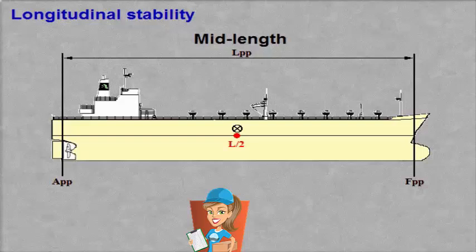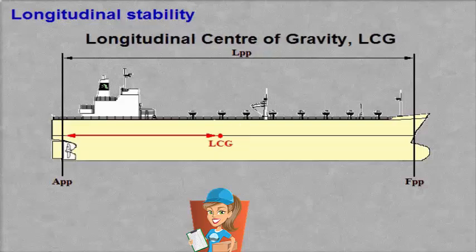LCG is the centre of longitudinal gravity, and its placement is dependent on the longitudinal placement of masses on board. Normally, LCG is measured in metres from the aft perpendicular.